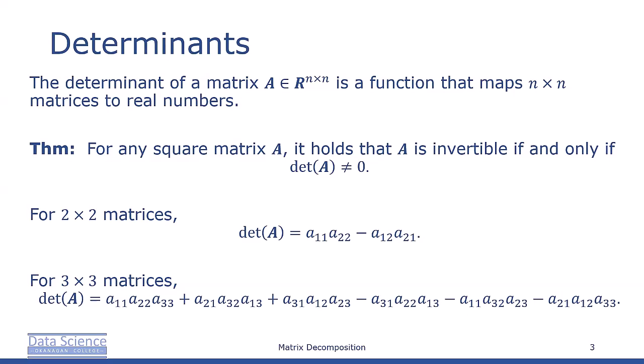For 3×3 matrices, we follow Sarrus' rule that says the determinant of A is a₁₁a₂₂a₃₃ + a₂₁a₃₂a₁₃ + a₃₁a₁₂a₂₃ - a₃₁a₂₂a₁₃ - a₁₁a₃₂a₂₃ - a₂₁a₁₂a₃₃. Now, if that seems like a lot to memorize, draw out a 3×3 matrix and try to observe the pattern that Sarrus' rule provides.